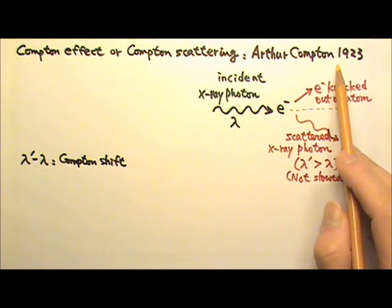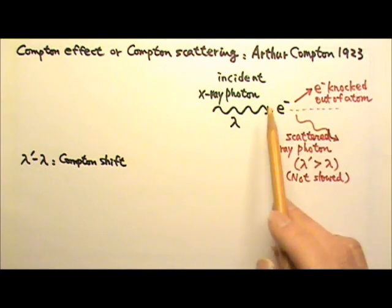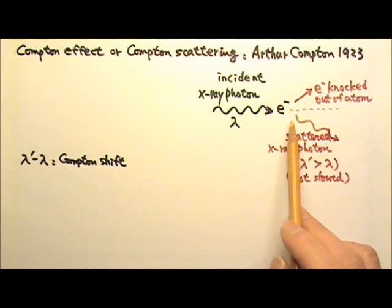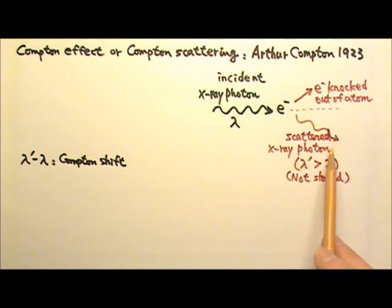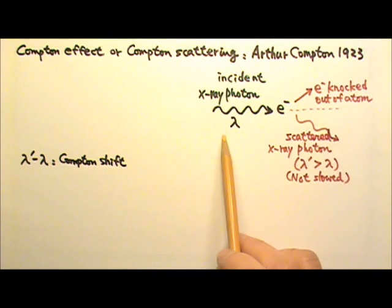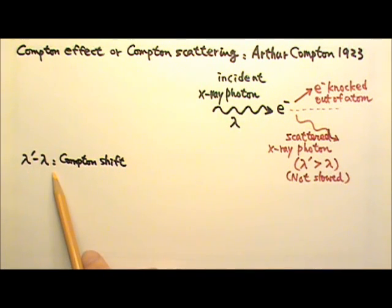In his 1923 experiment, Arthur Compton directed X-rays at a target such as a piece of graphite. He found that the scattered X-ray had a slightly longer wavelength than the incident X-ray. The wavelength difference between the scattered photon and the incident photon is called the Compton shift.